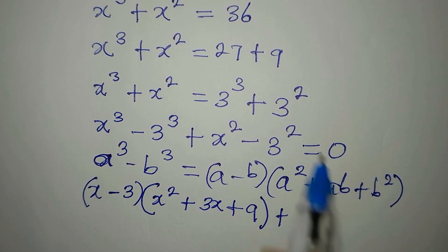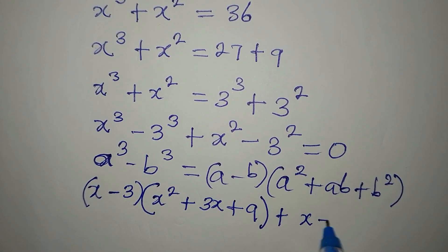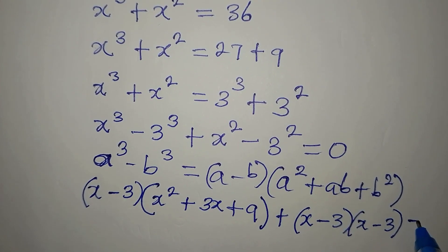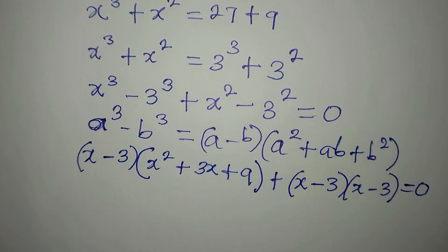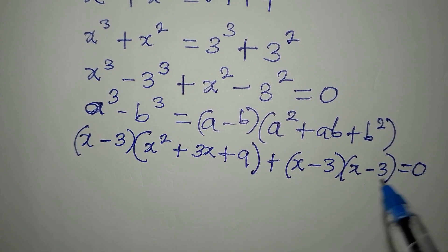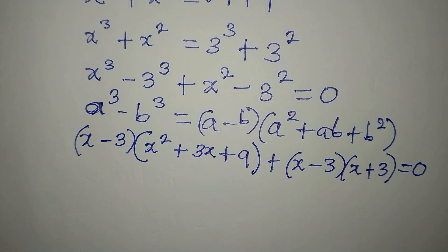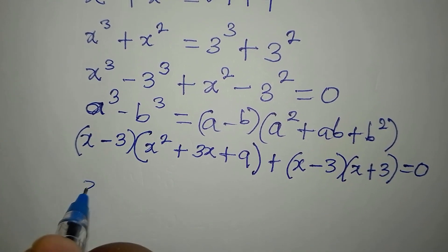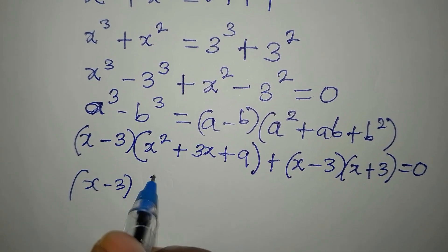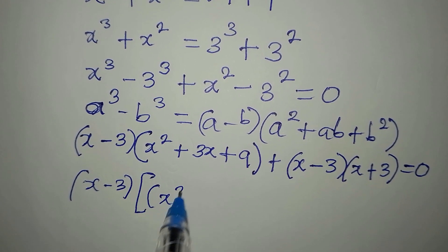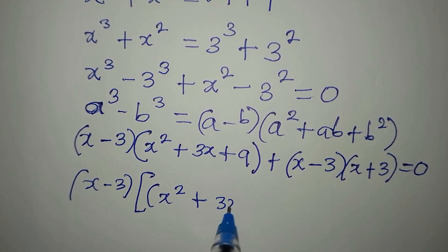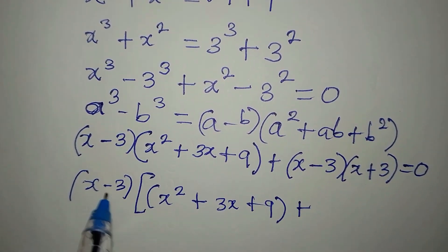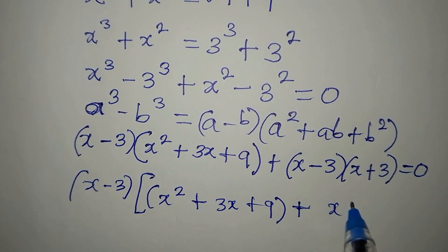Then for the second part, x squared minus 3 to the power of 2, this is a difference of two squares. So that factors as (x minus 3)(x plus 3). We now equate everything to zero.